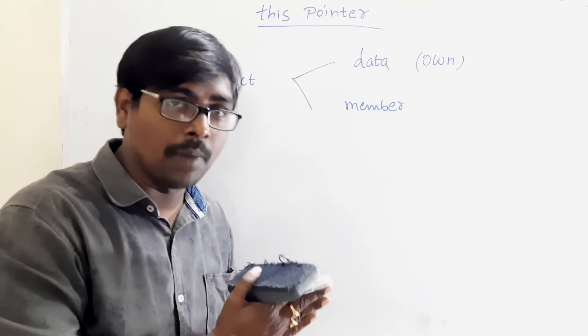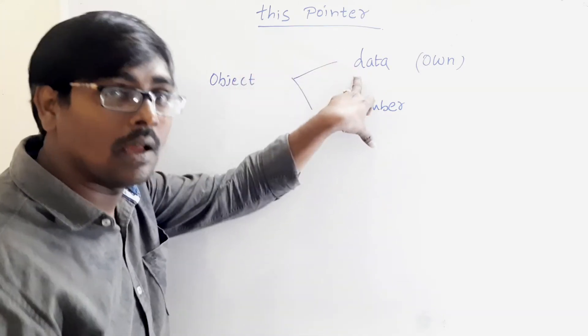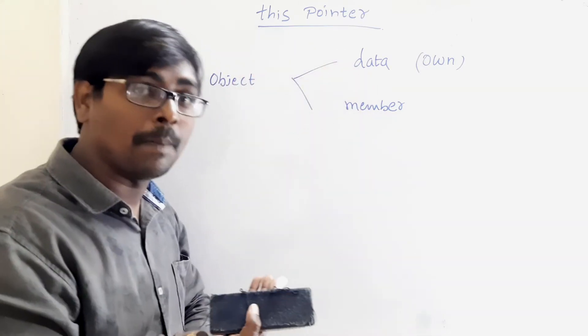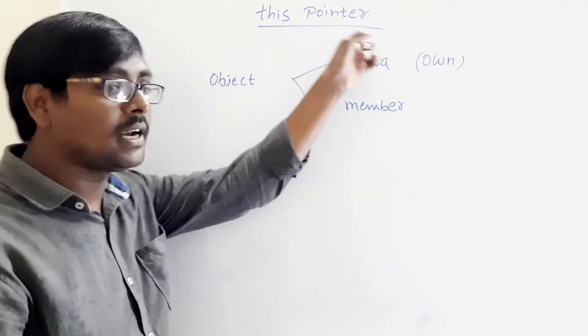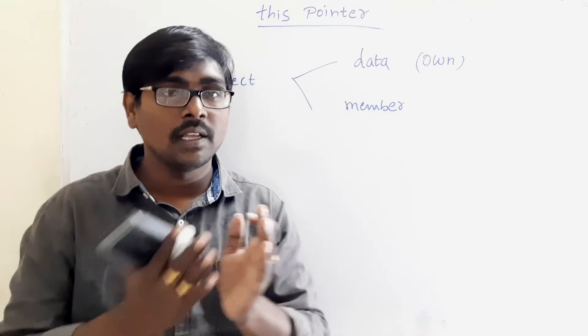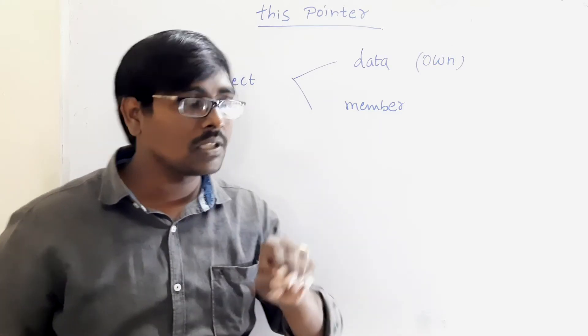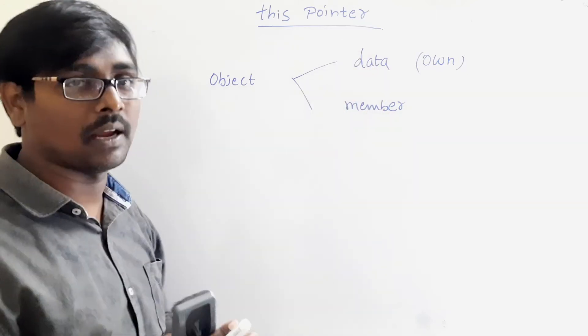Object 1 has some memory which stores the data members belonging to that object. Object 2 also has separate memory which stores the data members of that particular object. Similarly, object 3. That is, each object has a separate memory which stores the data members of a class.